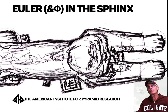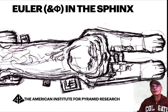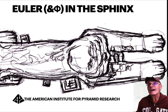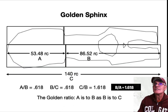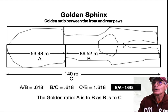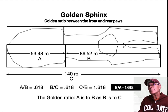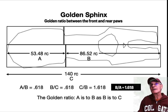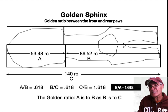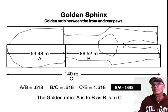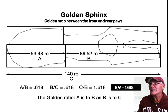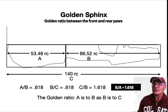Hello, thanks for watching. We're looking at Euler and Phi in the Sphinx — the golden Sphinx. There's a golden ratio between the front and the rear paws of the Sphinx: specifically between the front of the front paws and the front of the rear paws. Let's look at the right side first.